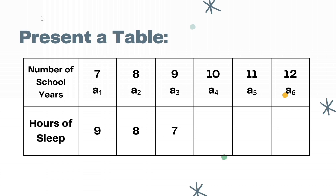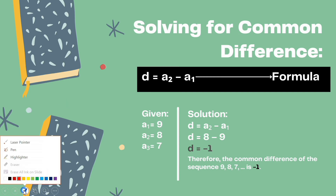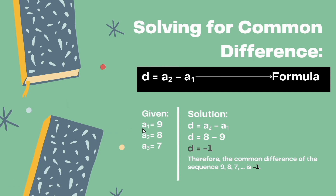Therefore, we are going to solve first for the common difference of the sequence. The formula we are going to use is d = A₂ − A₁, wherein the given values are 9 for A₁, 8 for A₂, and 7 for A₃. Substituting the given data into the formula and subtracting 8 from 9, we get negative 1. Therefore, the common difference of the sequence is −1.